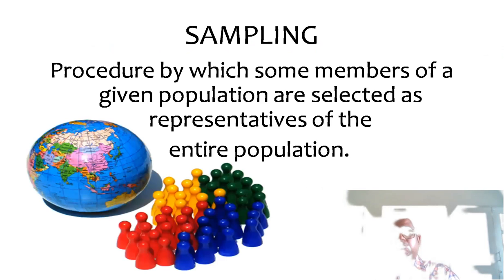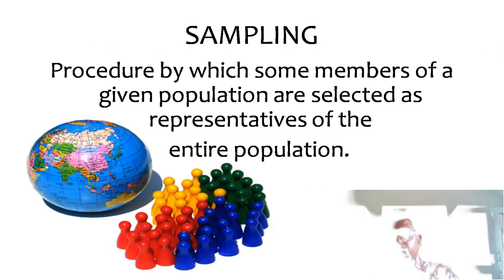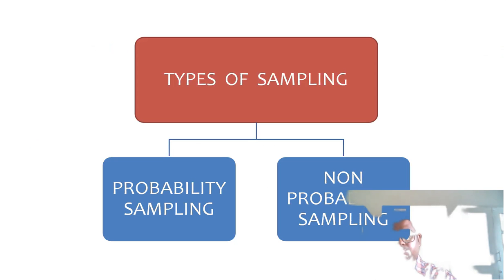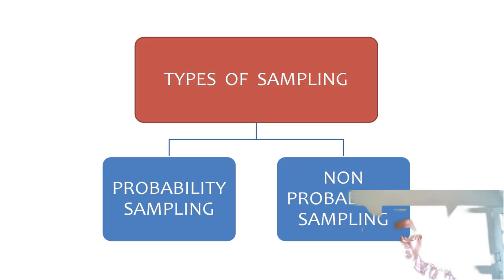Sampling is a procedure by which some members of a given population are selected as representative of the entire population. Before moving on, let's see the ideal requirements of a sample. A sample should meet certain criteria: efficiency, representativeness, measurability, size, coverage, goal orientation, feasibility, and it should be economical.